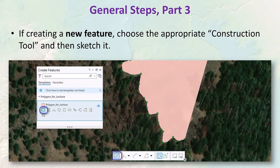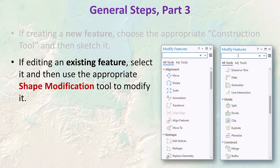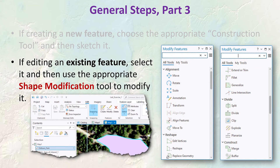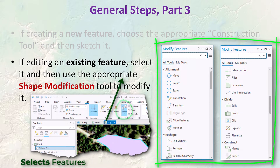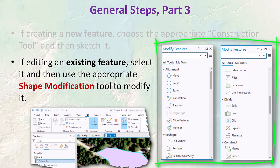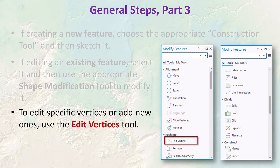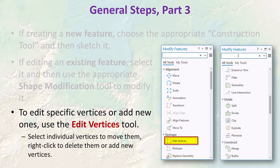When editing an existing feature, we select that feature and use the appropriate shape modification tool to modify it. There's a whole separate set of tools just for modifying shapes. For example, the edit vertices tool lets us see all the individual vertices — we can select individual ones and move or delete them, click on a line and right-click to create new vertices wherever we want.